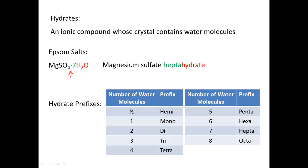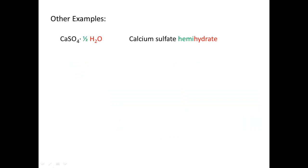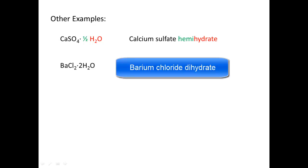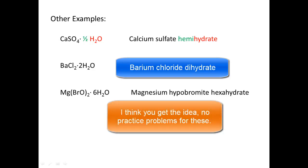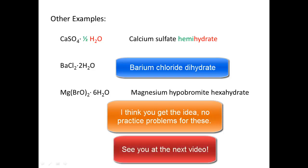These prefixes are going to be used in naming covalent compounds. So, you're going to need to know these. So, you might as well get to memorizing them right now. This example shows us calcium sulfate hemihydrate, which means you have half of a water molecule for every one formula unit. In nature, that means you have one water molecule for every two formula units. Here is barium chloride dihydrate and magnesium hypobromide hexahydrate. So, as you see, you only name the ionic compound normally, and then you add on the hydrate with its prefix indicating the number of water molecules incorporated into the crystal.